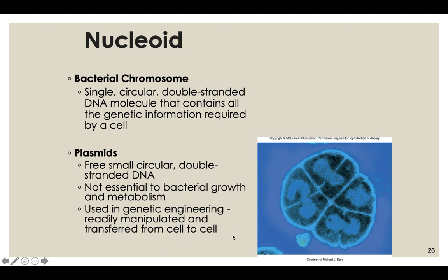We've figured out how to make our own plasmids in the lab — plasmids that can cause bacteria to make insulin or produce useful enzymes. Plasmids are very useful for genetic manipulation and genetic engineering.